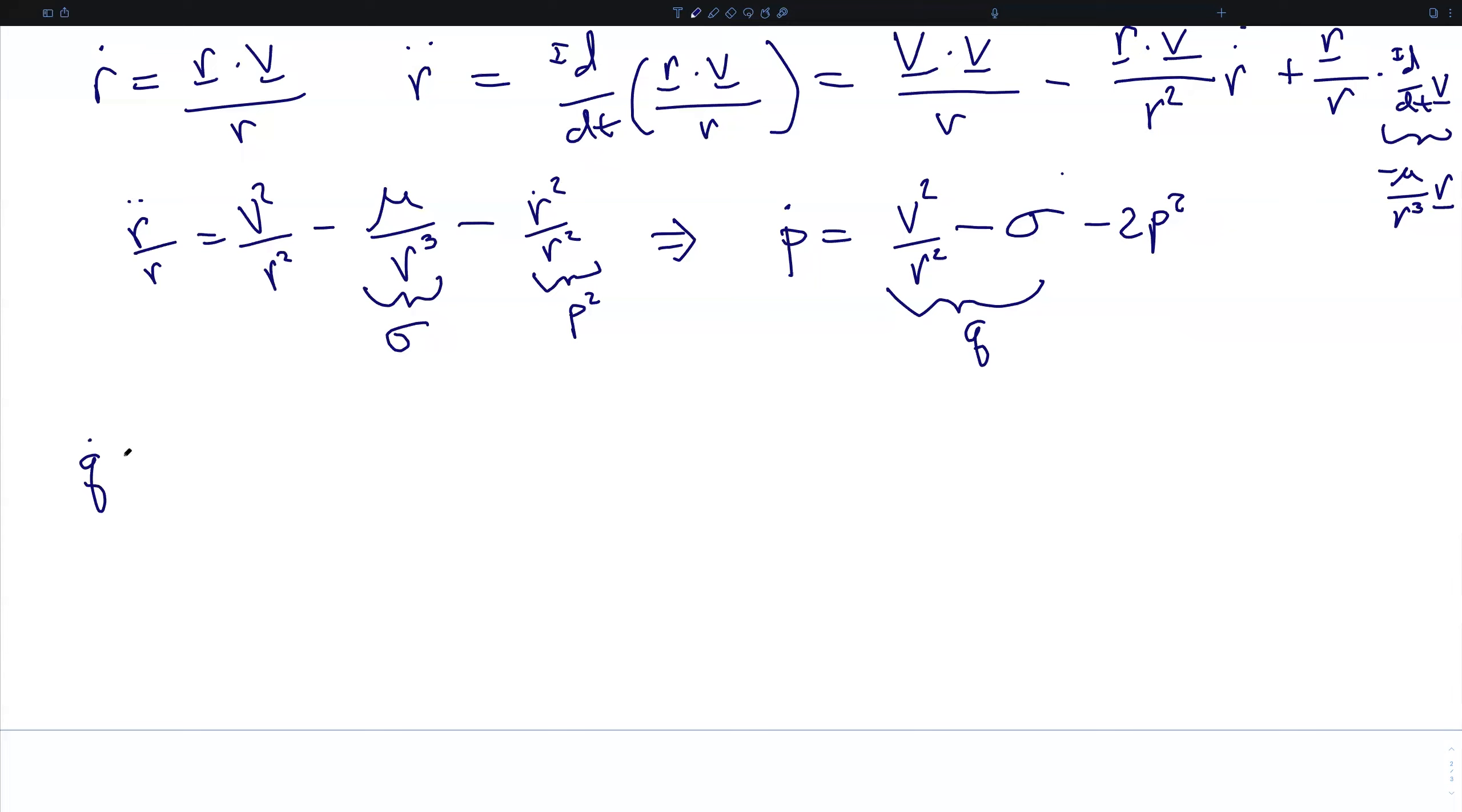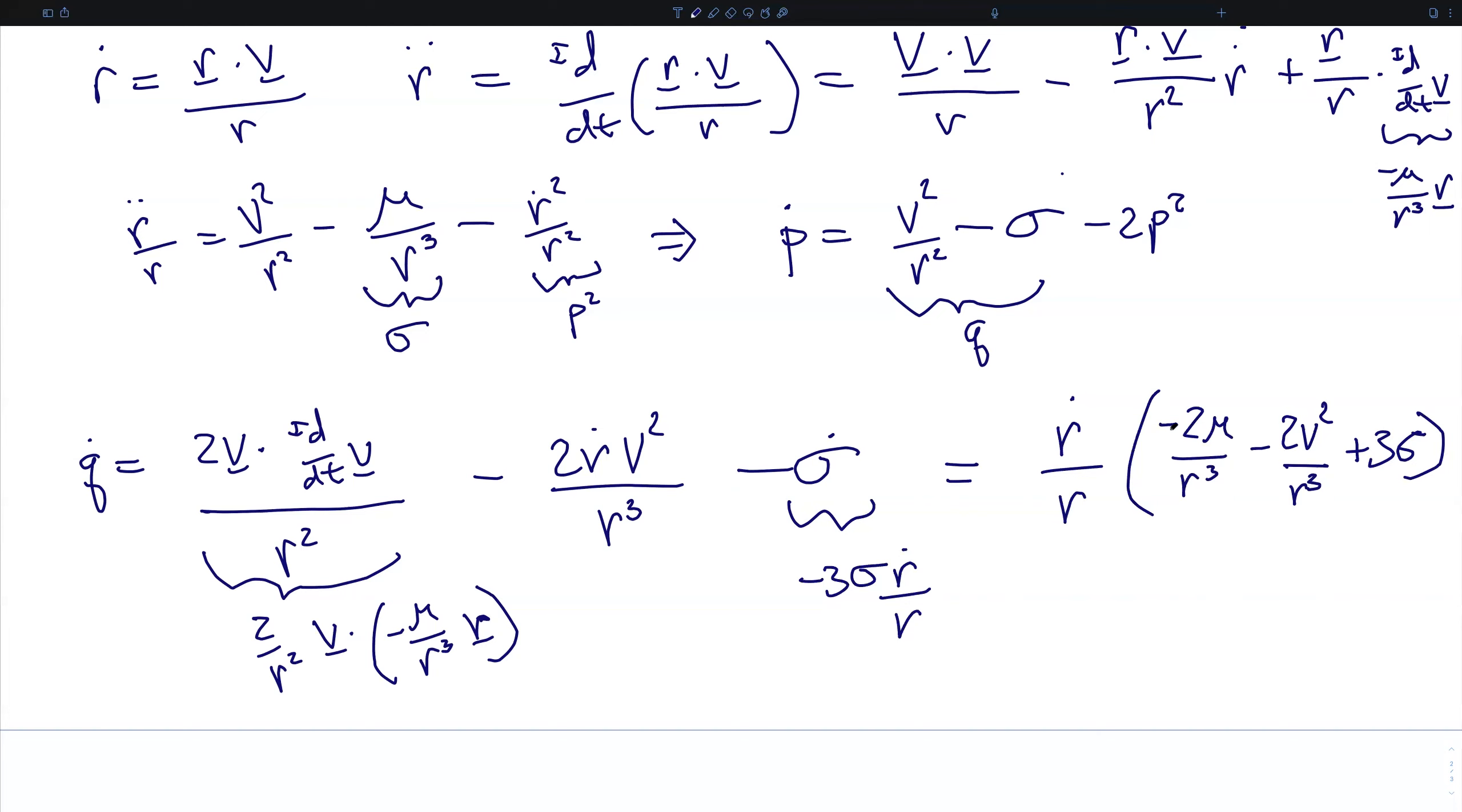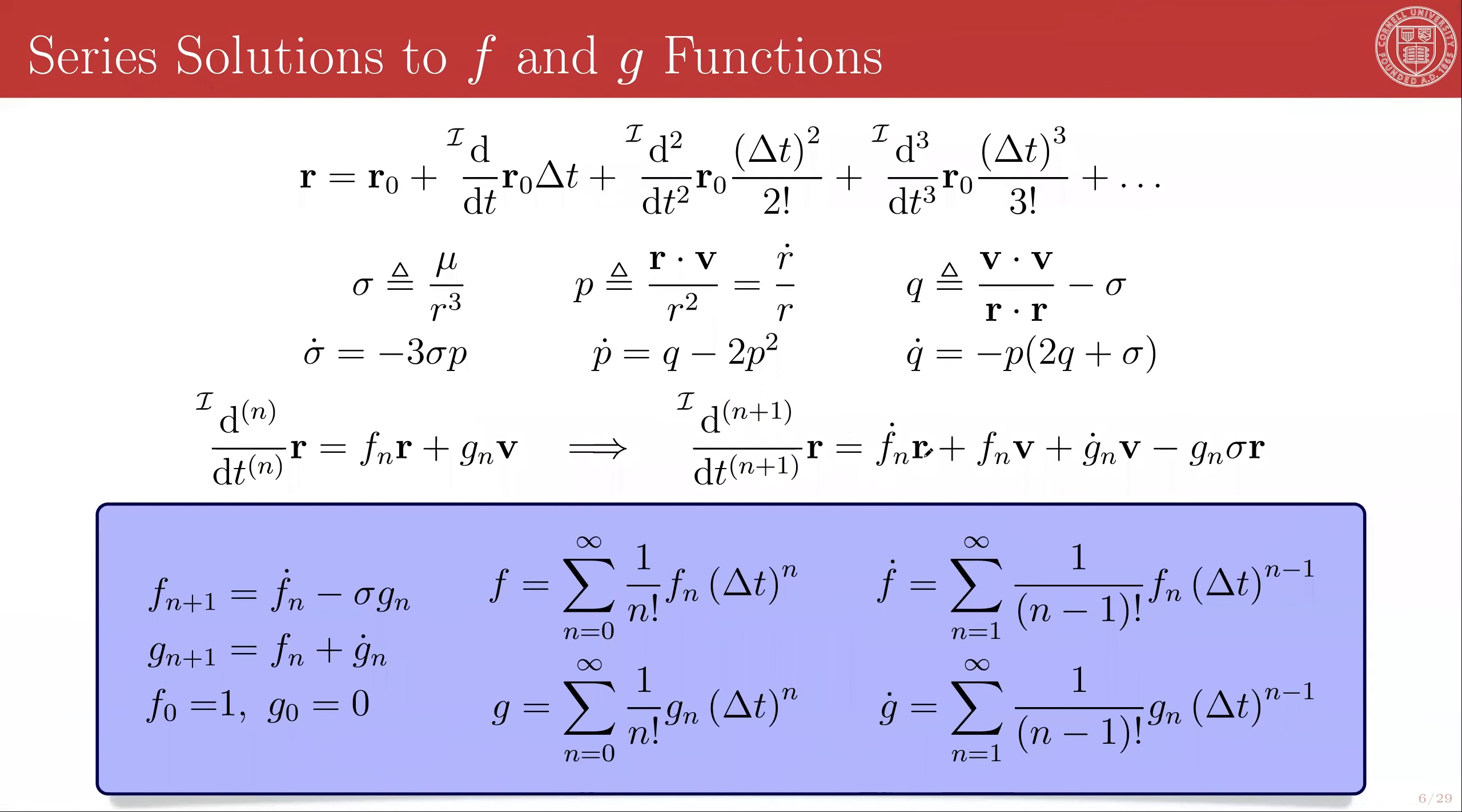Now, if we differentiate q, we will have that's 2v dotted into the inertial derivative of v over r squared minus 2r dot v squared over r cubed minus sigma dot. This term becomes 2 over r squared v dotted into negative mu over r cubed r, again, by Newton's law of gravity. And the sigma dot is, and so, this expression can be rewritten as, that's r dot over r times quantity negative 2mu over r cubed minus 2v squared over r cubed plus 3 sigma. This is p, and this entire thing is negative 2q minus sigma.